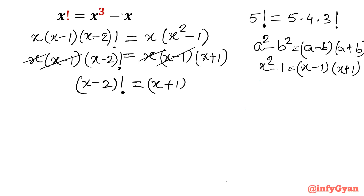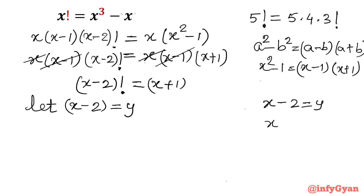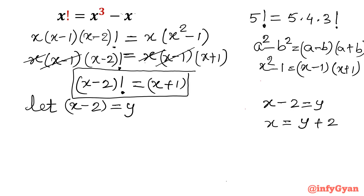Now let us put x minus 2 equal to y. If x minus 2 equals y, then x equals y plus 2. The right hand side is x plus 1, so I need x plus 1 in terms of y. x plus 1 will be y plus 3. So the right hand side x plus 1 becomes y plus 3, and the left hand side becomes y factorial is equal to y plus 3.